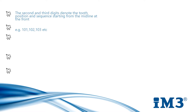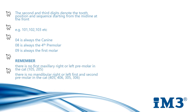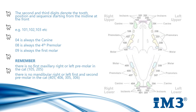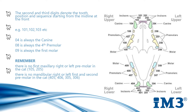To explain the Triadan system further: the first number always denotes the quadrant, and the second and third digits denote the tooth position and sequence, which always starts from midline at the front of the patient. For example, with the incisors we have 101, 102, 103 for the upper right, and the upper left starts with our twos. 04 is always the canine, and 08 is always our fourth premolar. 09 is always our first molar. Our feline patients are slightly different — they don't have a maxillary right or left premolar, so we're missing 105 and 205.